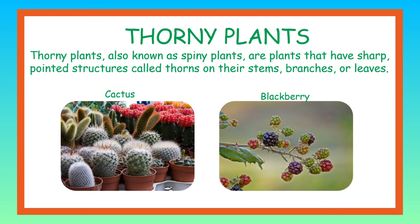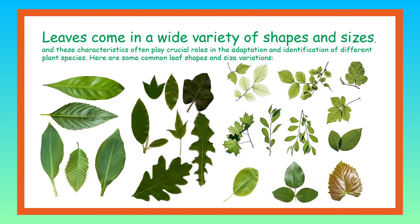Thorny plants, also known as spiny plants, are plants that have sharp pointed structures called thorns on their stem, branches, or leaves. Examples of thorny plants are cactus and blackberry. Now we know different types of plants.